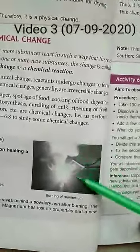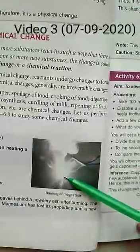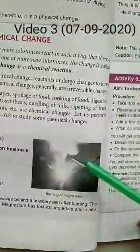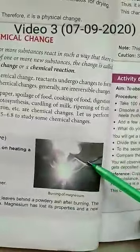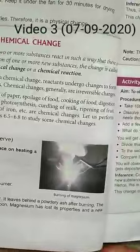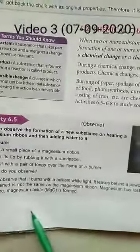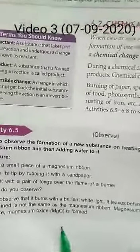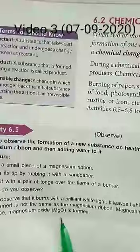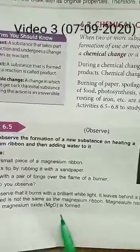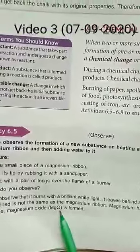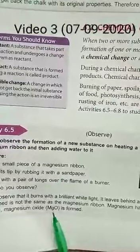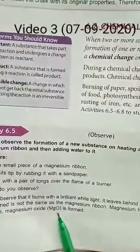After burning in the presence of air, magnesium reacts with oxygen and converts into magnesium oxide, that is MgO. So you have to write MgO — the formula for magnesium and oxygen — and we call it magnesium oxide.